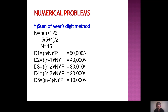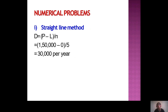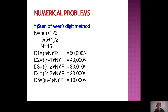Under the sum of years digits method, the formula for total N is N × (N+1) / 2. With N = 5 years, total = 5 × 6 / 2 = 15. D1 = (5/15) × 1,50,000 = 50,000. D2 = (4/15) × 1,50,000 = 40,000. D3 = (3/15) × 1,50,000 = 30,000. D5 = (1/15) × 1,50,000 = 10,000.